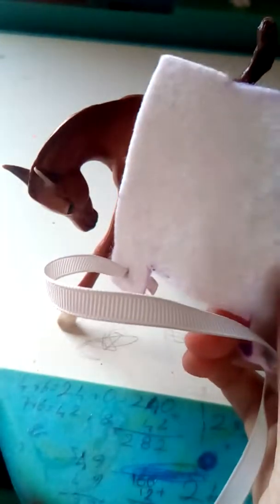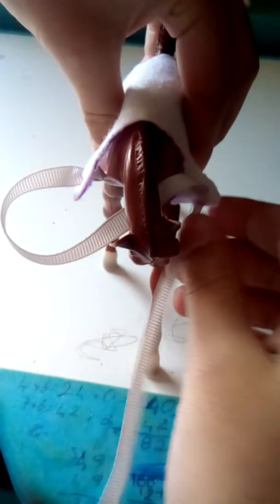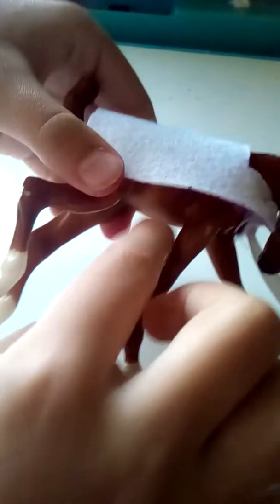Now, you should have something looking like this. Put it on your foal like this and pull on the loose end. You'll have to do this for the stomach as well.